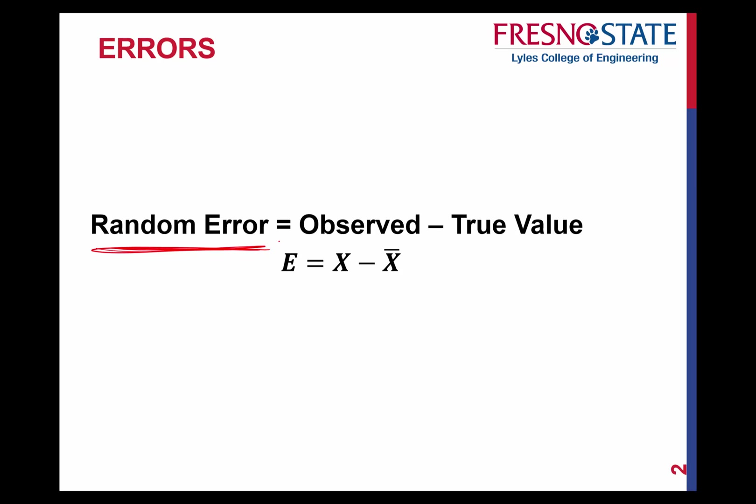What we're going to assume now is that we've eliminated all mistakes and we've eliminated all the systematic errors. By doing so, that leaves us with just the random error. So from this point on, when we talk about error, let's always refer to that as being your random error, which excludes your mistakes and your systematic errors.